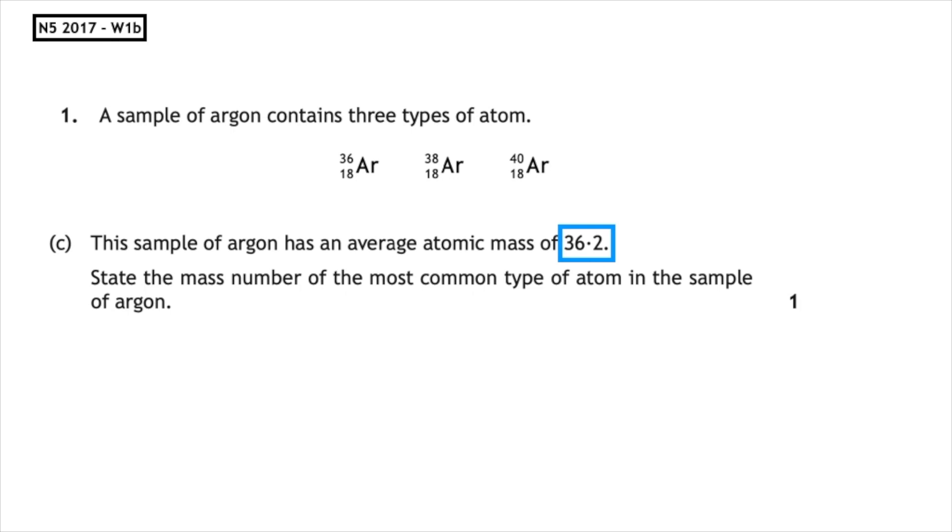So we have to look at 36.2. Which mass is that closest to? It's closest to argon 36, which means this is the most abundant isotope.